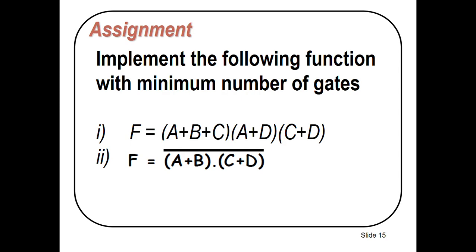This is your assignment for today — you can try it at home. We have two functions here. Function number two is straightforward to implement. For the first function, you can apply the bar twice and use De Morgan's theorem to simplify it, then start the implementation. This was the lecture for today. If you have any questions or problems, please feel free to contact me. Thank you very much. See you next time.